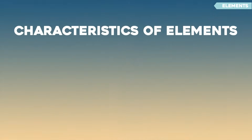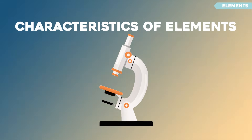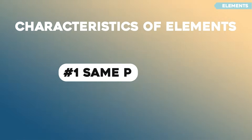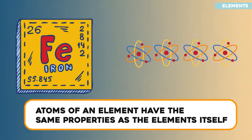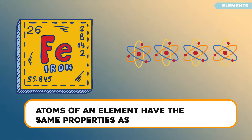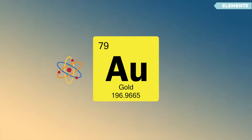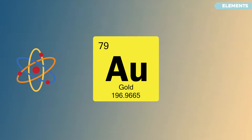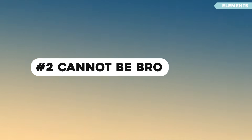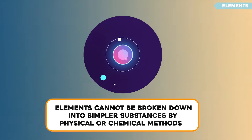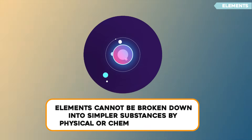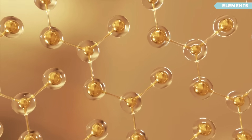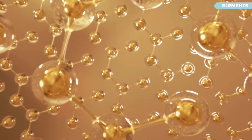Characteristics of Elements. Let's talk about some characteristics of elements. First, same properties: the atoms of an element have the same properties as the element itself — every atom of gold has the same properties as a gold bar. Second, cannot be broken down: elements cannot be broken down into simpler substances by physical or chemical methods. Gold will always be gold unless you combine it with something else.